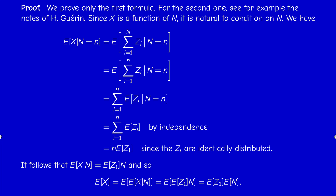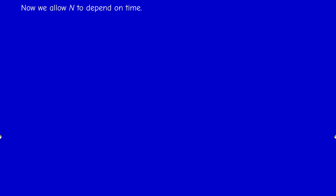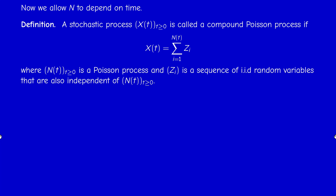Having done this, we can now move to the definition of a compound Poisson process. Instead of summing from 1 to a fixed random variable N, we allow N to depend on time, so it becomes a stochastic process. A stochastic process X(t) is called a compound Poisson process if it can be written as the sum of i.i.d. random variables Z_i from i=1 to N(t), where N(t) is a Poisson process. This turns the single random variable into a stochastic process.